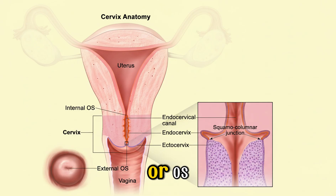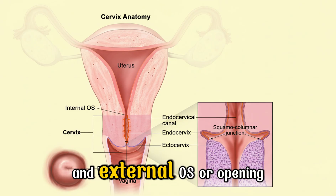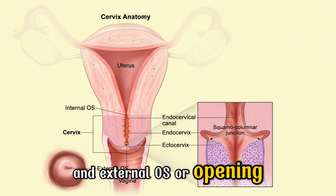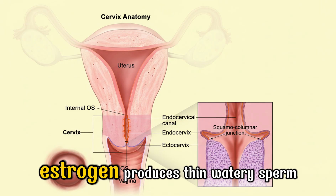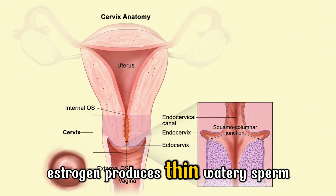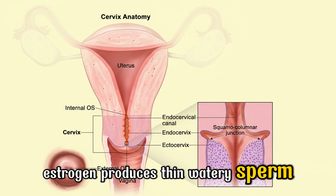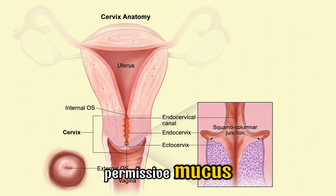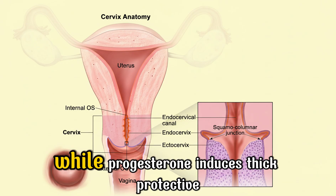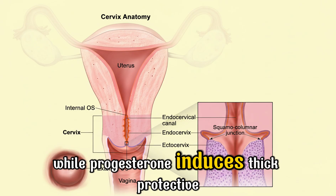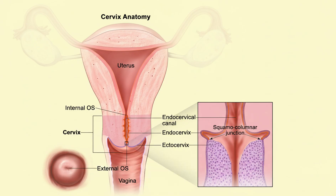The cervix also has an internal os and an external os or opening. Estrogen produces thin, watery, sperm-permissive mucus, while progesterone induces thick, protective mucus.